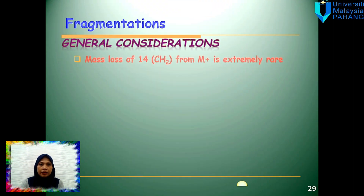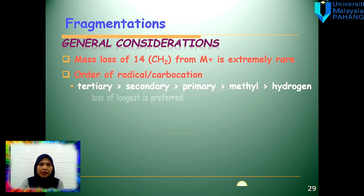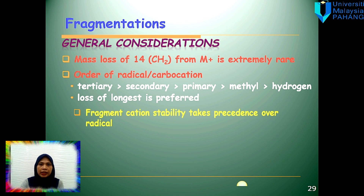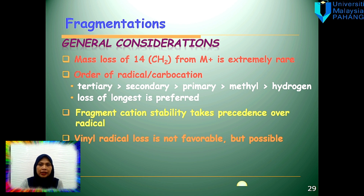Before we can write down the fragmentation pattern, we have to consider certain characteristics. The mass loss of 14 (CH2) from M+ is extremely rare, and the carbon cation or radical tends to lose the longest chain rather than the shortest. For example, tertiary is more preferable than secondary, followed by primary, methyl, and hydrogen. The fragmentation of the cation will be taken as precedence over the radical, and even radical loss is not preferable but is possible.